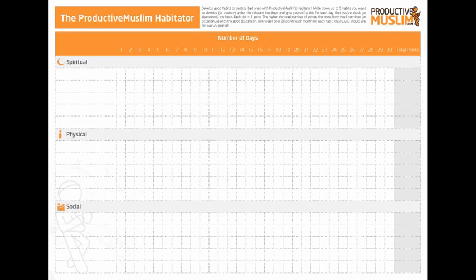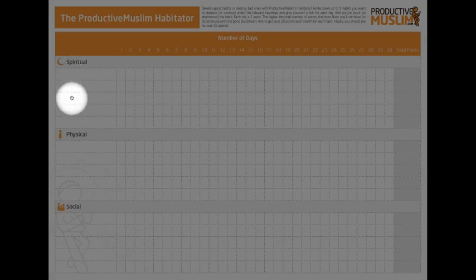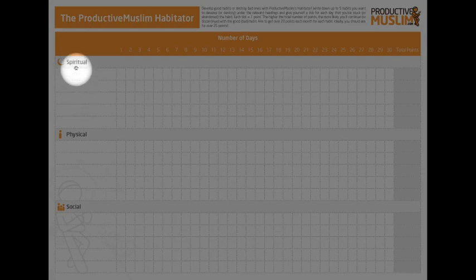So what's unique about the ProductiveMuslim Habit list or the Habitator? We actually try to add a bit of spin to it and help you categorize your habits into three main areas. The first area is called Spiritual Habits. Here's where you're going to develop habits such as praying on time every single day, reading half an hour of Qur'an every single day, giving at least one dollar of charity every single day — things you'd like to do every single day on a spiritual, personal, worship basis.